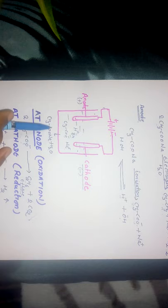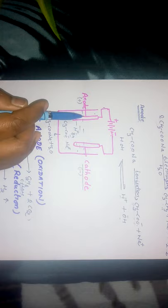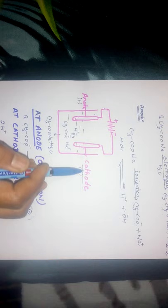This reaction takes place inside an electrolytic cell in which we take sodium acetate and water as the electrolyte. The electrolytic cell has two electrodes — an anode and a cathode. The anode is connected to the positive terminal of the battery, and the cathode is connected to the negative terminal of the battery.